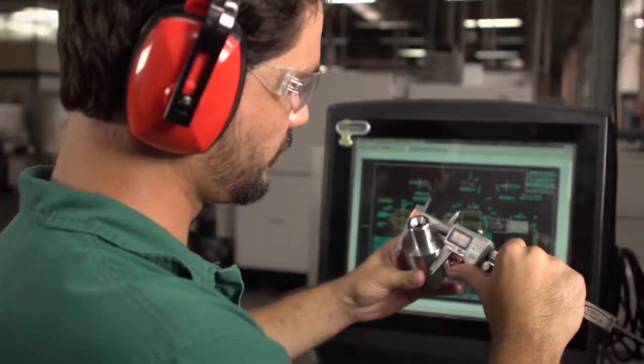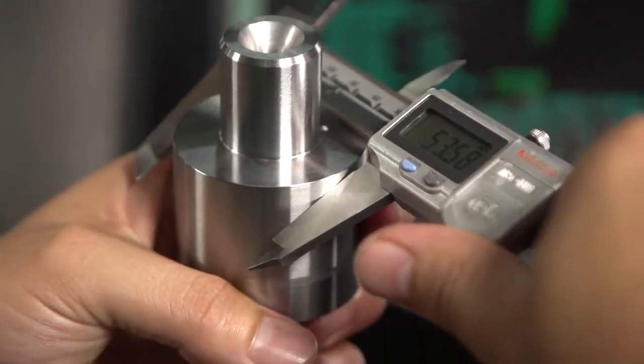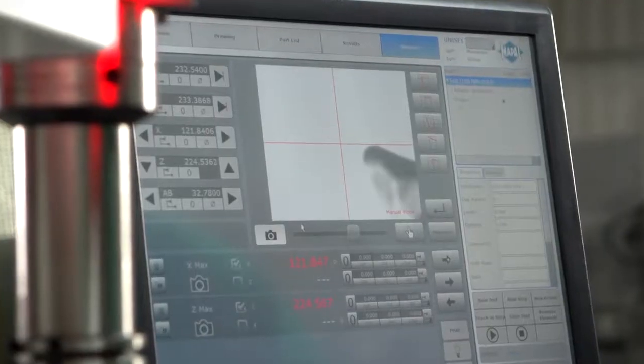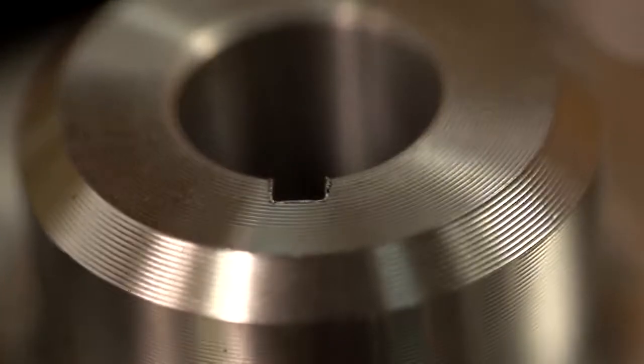The quality control of all pieces is done through multiple inspections in each phase, from the raw material to the finished product.